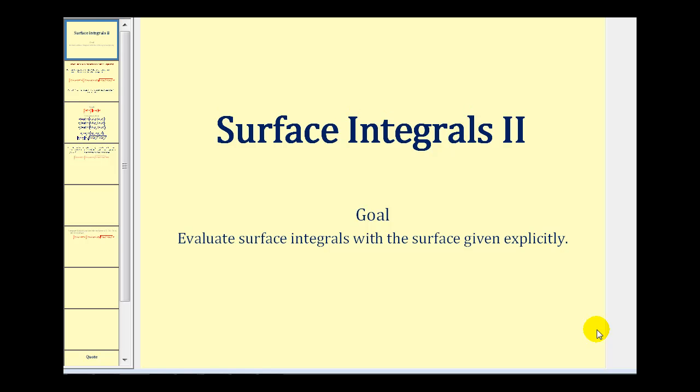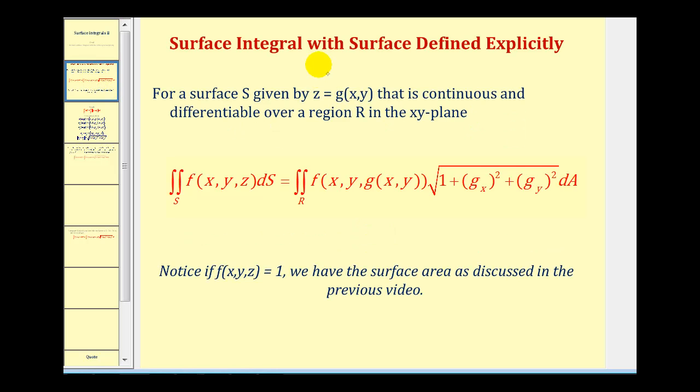Welcome to a second example of surface integrals where the surface is given explicitly. If our surface is given by z equals g(x, y) and the following conditions are met, we can rewrite the double integral of f(x, y, z) integrated with respect to s as a double integral over the region R in the x, y plane